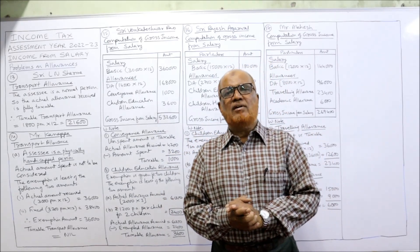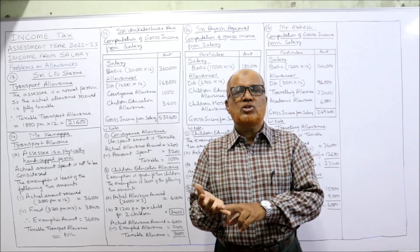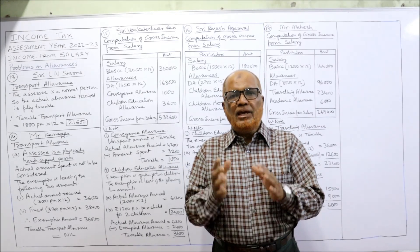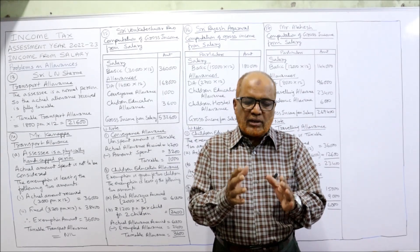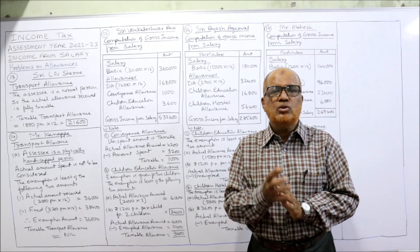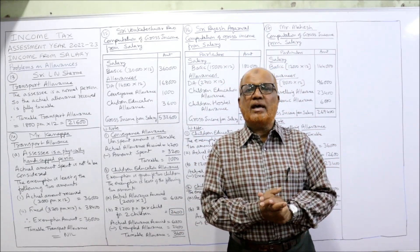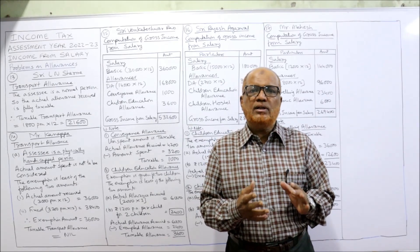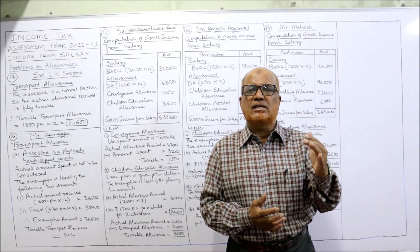Totally 17 problems have been completed on allowances, covering entertainment allowance, house rent allowance, children education allowance, children hostel allowance, transport allowance, conveyance allowance, and academic allowance. Without understanding these short problems it is useless to go to the main problems, so watch all these short problems carefully twice or thrice and be perfect. If you are satisfied with my lecture, give a like, share my channel among your groups and friends, subscribe if you haven't yet, and by the super thanks below the video. We will continue the next topic — perquisites — in the next video. Thank you.